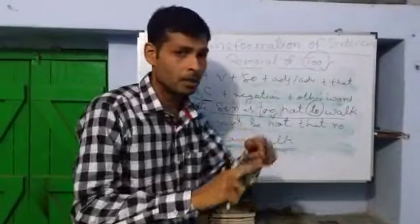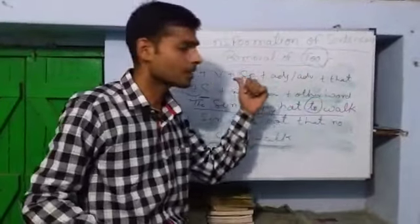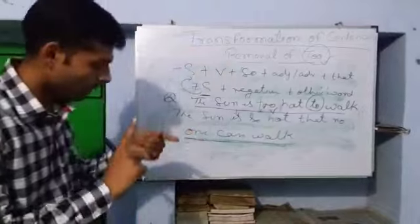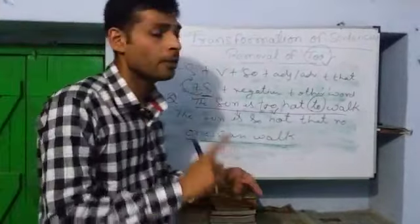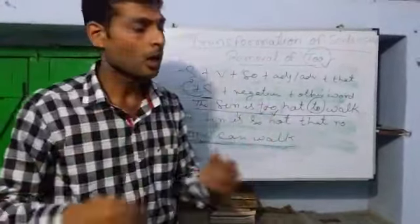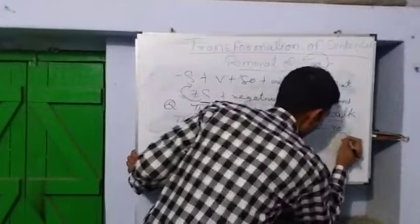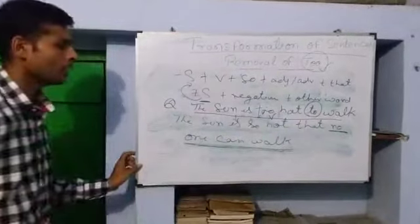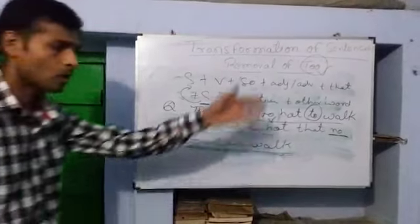I have already described in the previous class that whenever too comes with infinitive, it gives negative meaning. Here is the negative word and it gives the negative meaning: no one can walk.